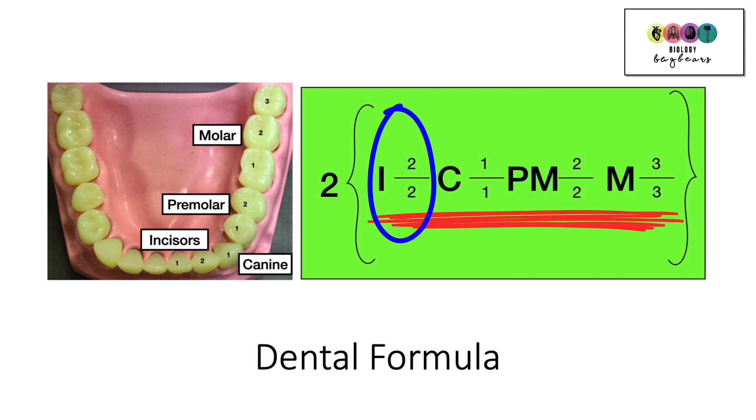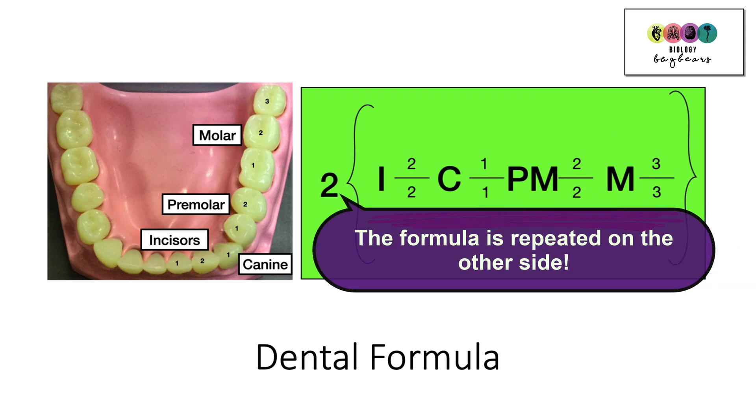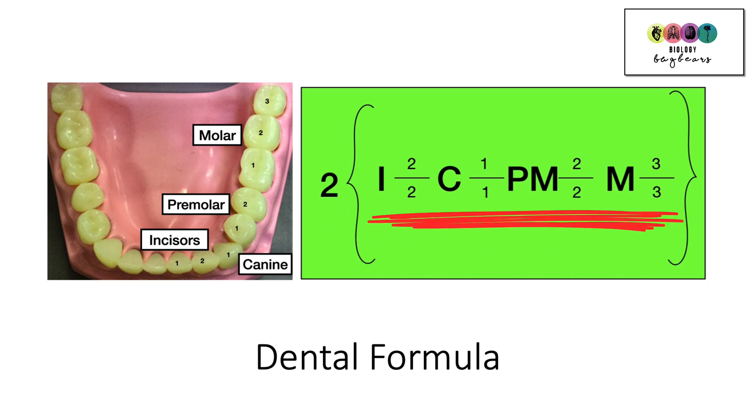So there's two incisors, top and bottom, one canine, top and bottom, two premolars, top and bottom, and three molars, top and bottom. And the number two is to tell you that the same pattern or the same combination is on the other half of the jaw. So you could be given a dental formula for another animal and they ask you how many teeth the animal has. Don't forget to multiply it by two.